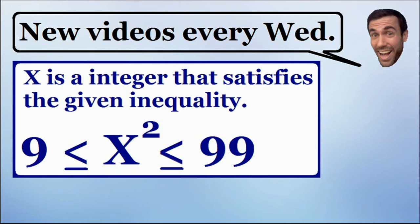It says x is an integer that satisfies the given inequality, and the inequality is x squared is greater than or equal to 9 and less than or equal to 99.